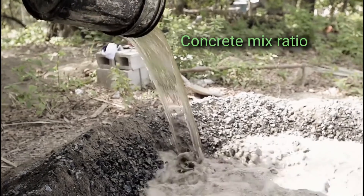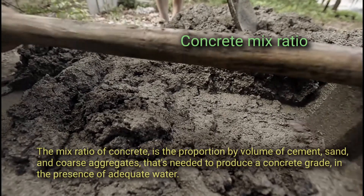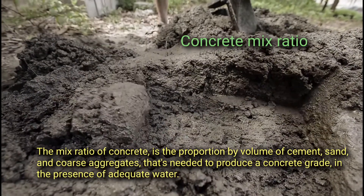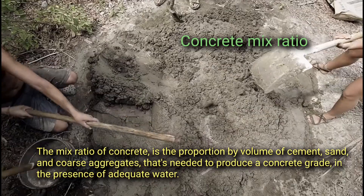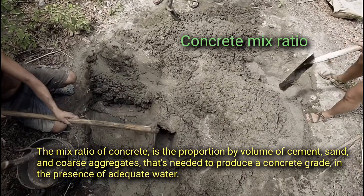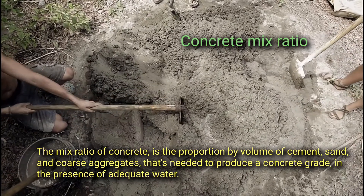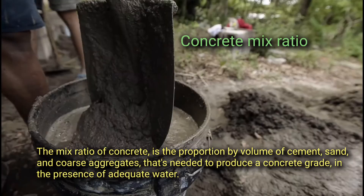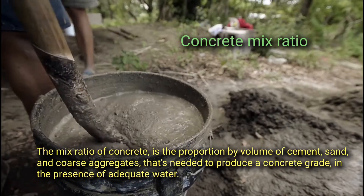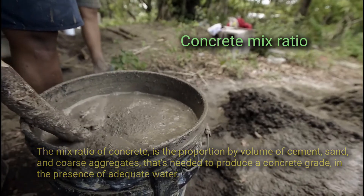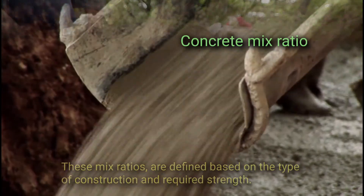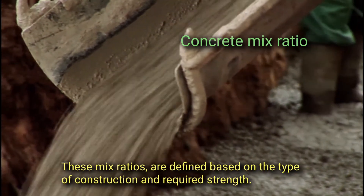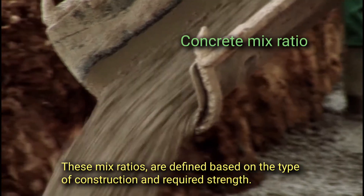Concrete mix ratio. The mix ratio of concrete is the proportion by volume of cement, sand, and coarse aggregate that is needed to produce a concrete grade in the presence of adequate water. These mix ratios are defined based on the type of construction and required strength.